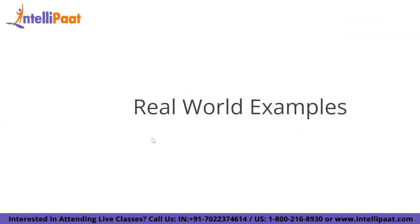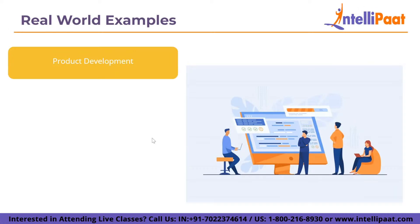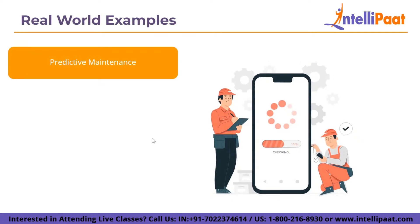Big data can help with a variety of business activities including customer experience and analytics. For product creation, companies such as Netflix and Procter & Gamble use big data to predict customer demand. They create predictive models for new products and services by categorizing key characteristics of previous and current products and modeling the relationship between those characteristics and commercial success. P&G plans, produces, and launches new products using data and analytics from focus groups, social media, test markets, and early store rollouts.